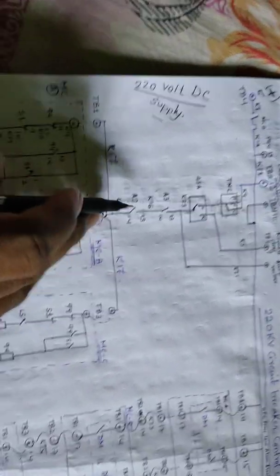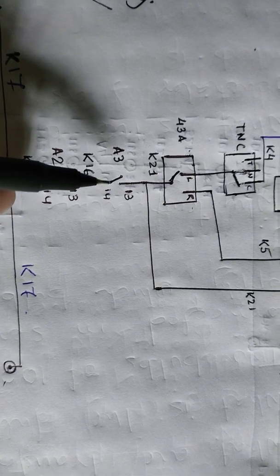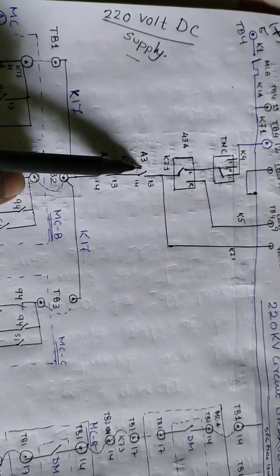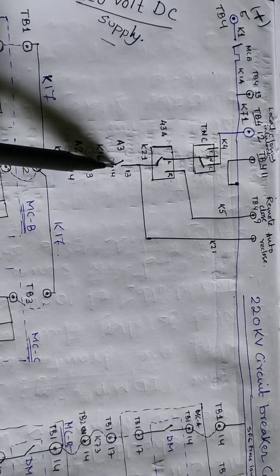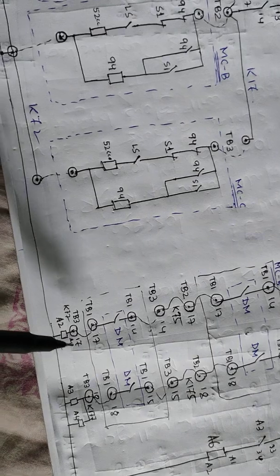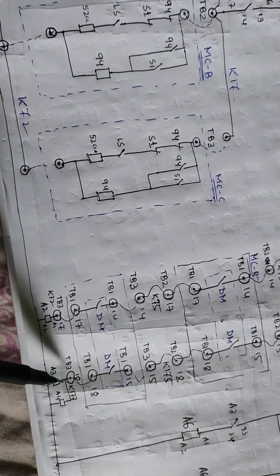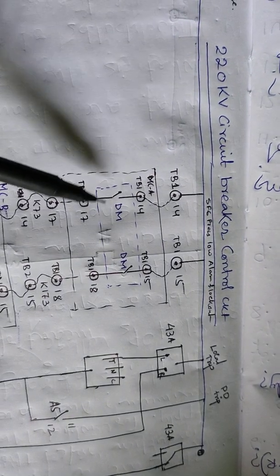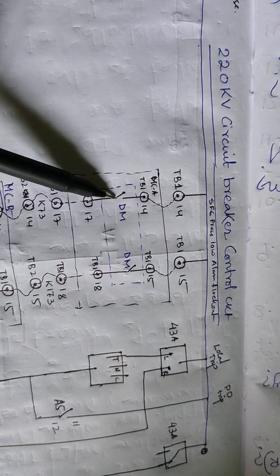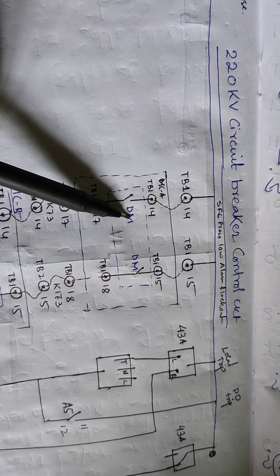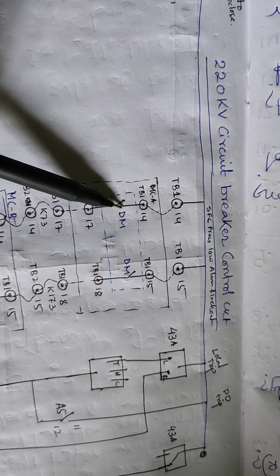If we connected the LR switch in the local terminal, then this local DC will come through from here up to contact A3. What is the A3 contact? This A3 is the NO contact, and the coil of A3 is connected here. The A1-A2 contact is here and this is connected with the density monitor's contact.